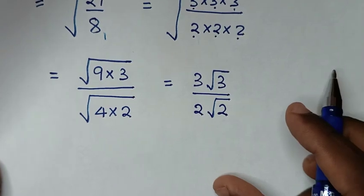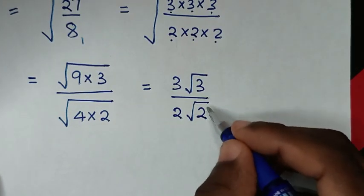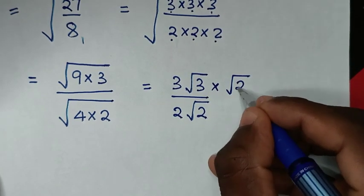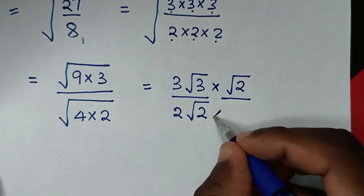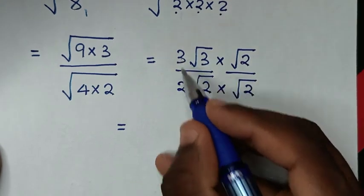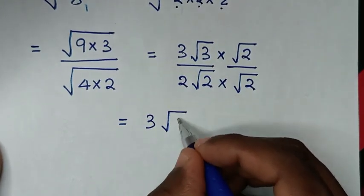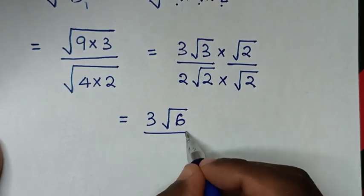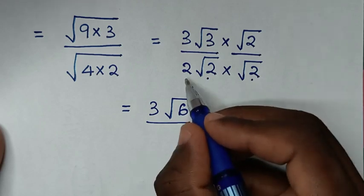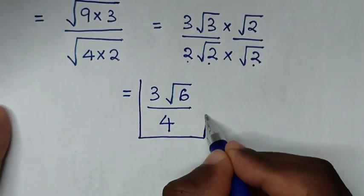Then in the next step we rationalize the denominator, so we multiply by square root of 2 in the numerator and in the denominator. So it will be times square root of 2 over square root of 2. This gives us 3 times square root of 3 times square root of 2, which is square root of 6. Over square root of 2 times square root of 2 is 2, and 2 times 2 is 4. Therefore the final answer is 3 square root of 6 over 4.